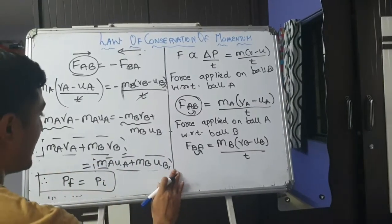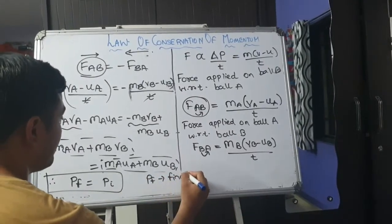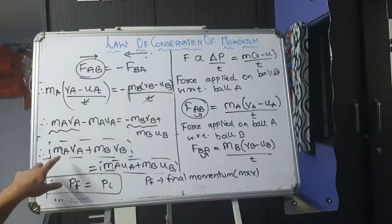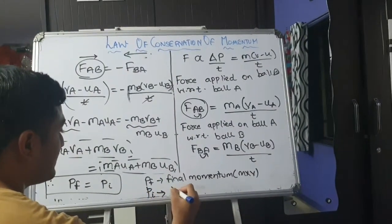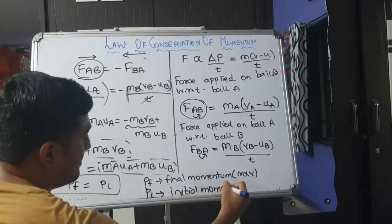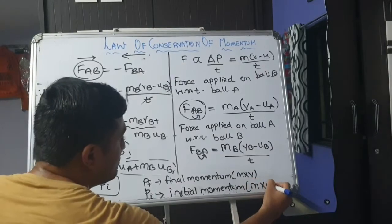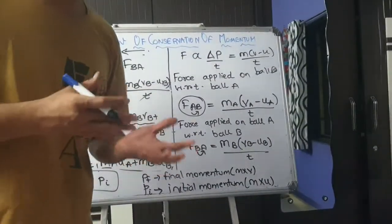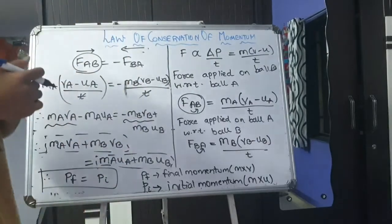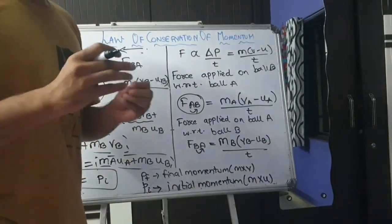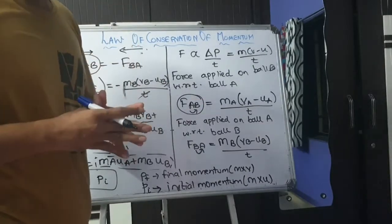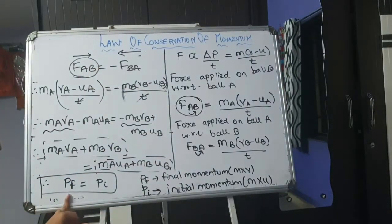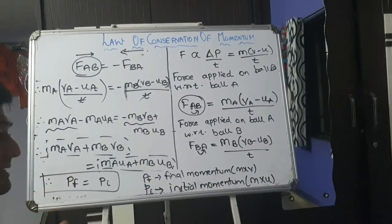What is Pf over here? Pf is nothing but your final momentum. That is represented over here as M cross V, in M cross V form for both the balls. And initial momentum is Pi. Initial momentum is represented as M into U. So here, whatever was the initial momentum that was applied on the ball A to B, that is same as the momentum that is applied from B to A. So that gives us an idea that no loss of velocity is involved over here. As the mass is constant, momentum is conserved.